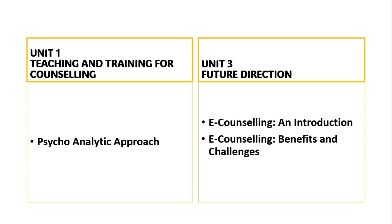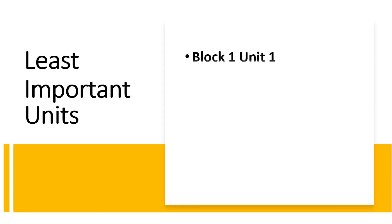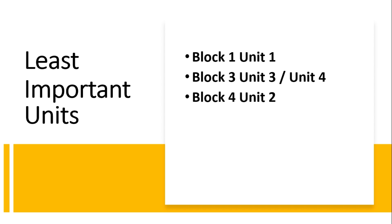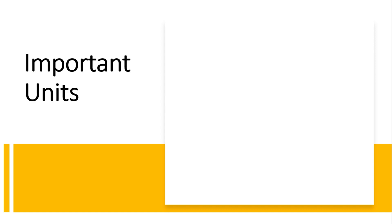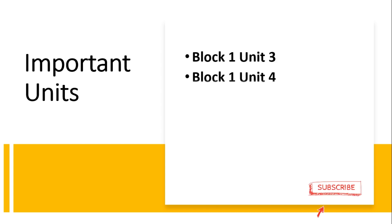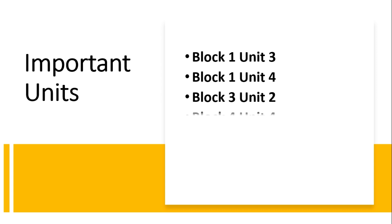Let's summarize the important points. Units which are least important: Block 1 Unit 1, Block 3 Unit 3 or Unit 4, Block 4 Unit 2 — you can either skip these or go through them if you have time. The most important units you need to study without skipping: Block 1 Unit 3, Block 1 Unit 4, Block 3 Unit 2, and Block 4 Unit 4.